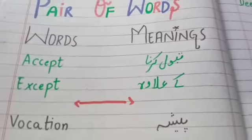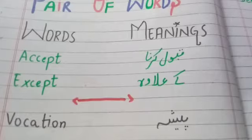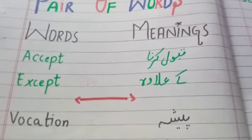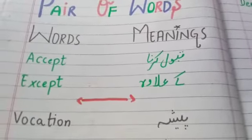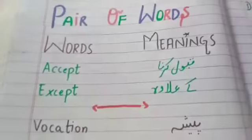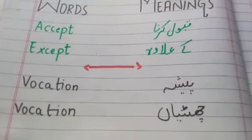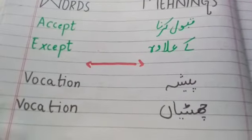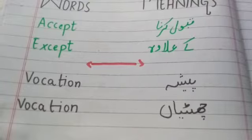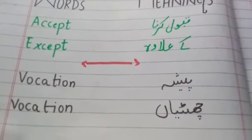Its meaning is 'qabool karna.' Number two: except — this word is also given in your chapter, aside from accept. Number three: vocation, and its meaning is 'pesha' (profession).